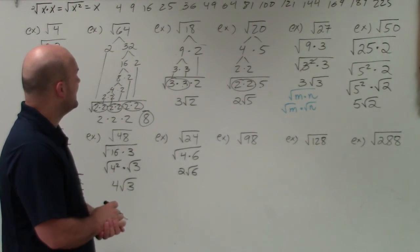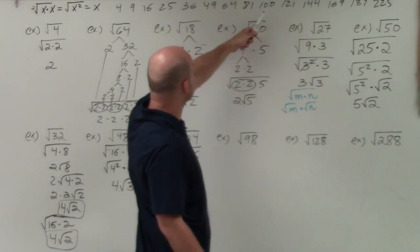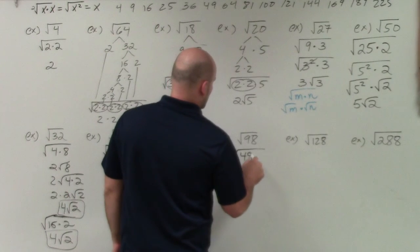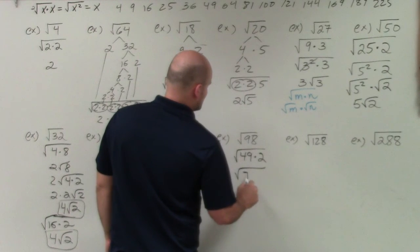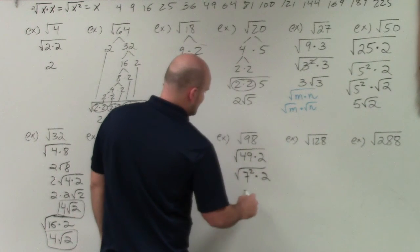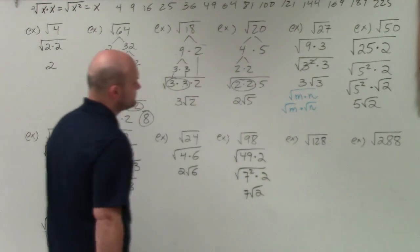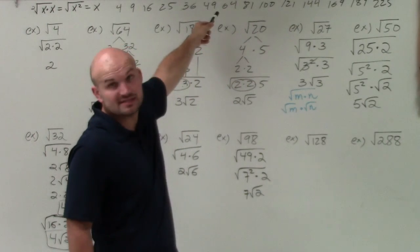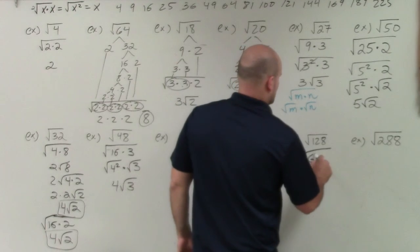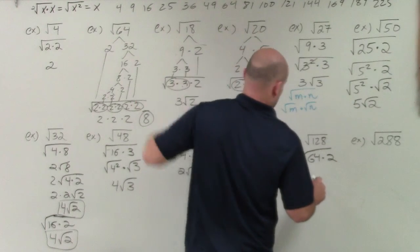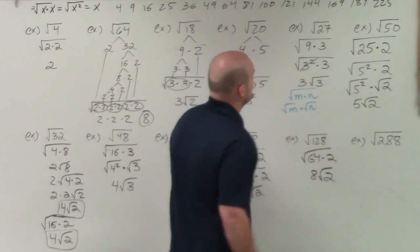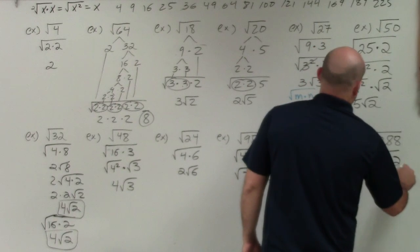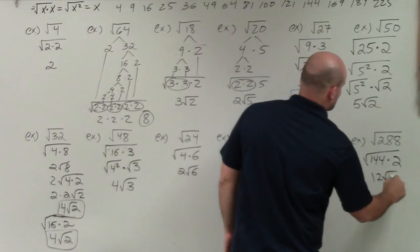For √98, going through the list of perfect squares, 49 works: 49 times 2. So √98 = √(7² × 2) = 7√2. For √128, I can see 64 times 2, and the square root of 64 is 8, so √128 = 8√2. For √288, that's 144 times 2, and the square root of 144 is 12, so √288 = 12√2.